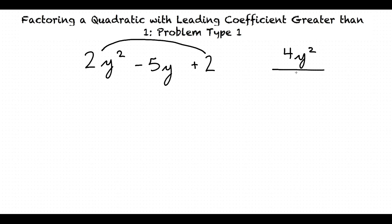We want to make a t-chart. We need to think of two factors of 4y squared that multiply together to equal 4y squared and also add together to equal negative 5y. The factors of 4y squared are 1y, 2y, and 4y. To get negative 5y and positive 4y squared, two factors that work are negative 4y and negative y, because negative 4y times negative y equals positive 4y squared, and negative 4y minus y equals negative 5y.